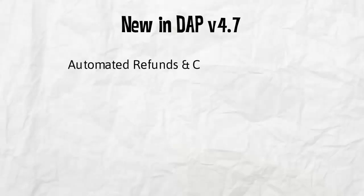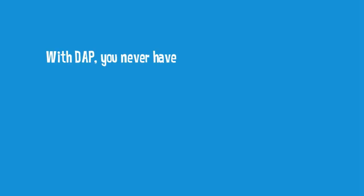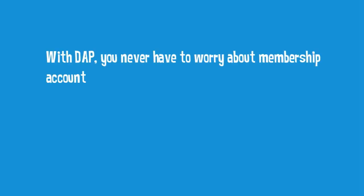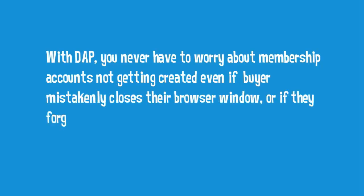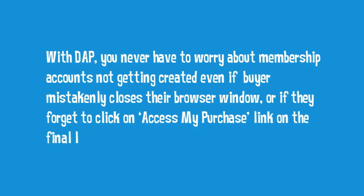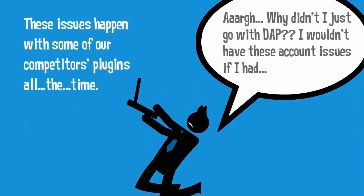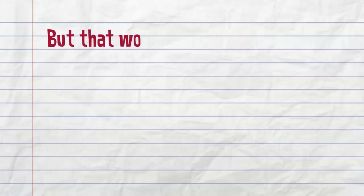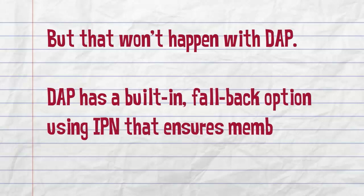In this new release, Dapp will also support automatic refunds and automatic cancellations with both Clickbank and Warrior Plus. With Dapp, you basically never have to worry about a membership account not getting created, even if the buyer mistakenly closes their browser window or if they forget to click on the access my purchase link on the final landing page. These issues happen all the time with some competitor plugins, but they won't happen with Dapp. Dapp has a backdoor via IPN that ensures membership account creation.